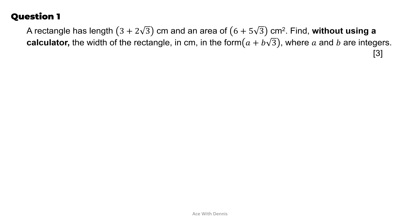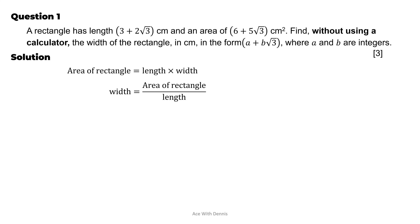Question 1. A rectangle has a given length and area. Find, without using a calculator, the width of the rectangle in cm in the form a plus b root 3, where a and b are integers. 3 marks. We know that the area of a rectangle is length times width. Hence, width equals area over length. We substitute the value (6 plus 5√3) over (3 plus 2√3).